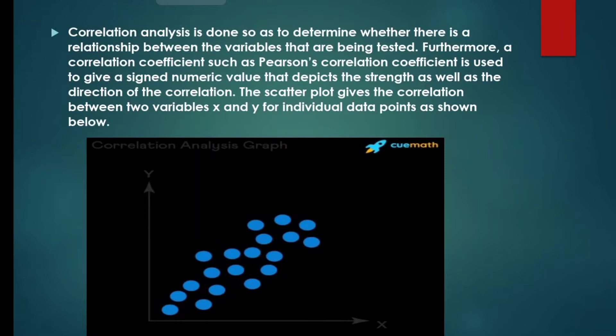The scatter plot gives the correlation between two variables X and Y for individual data points as shown below. This is the graph of the correlation analysis.